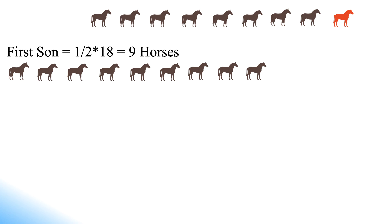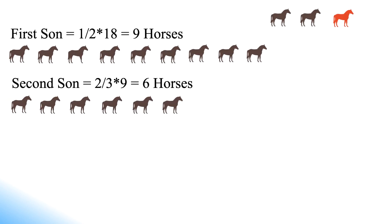Now two-thirds of the horses left are obtained by the second son. That is 2/3 multiplied with 9, which is equal to 6 horses. So total horses remaining now is 18 minus 9 minus 6, which is equal to 3.